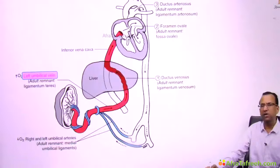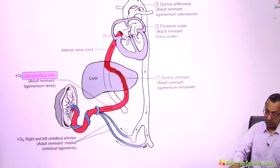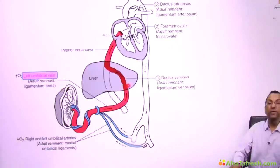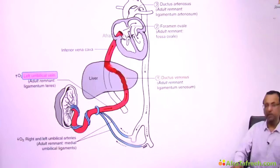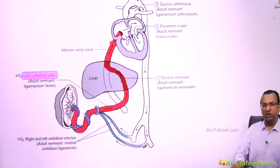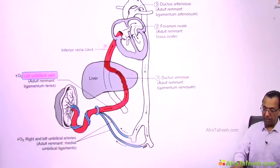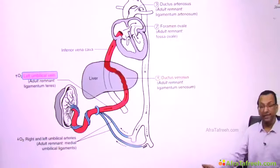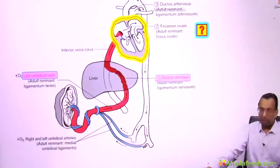The ductus venosus takes the high-concentration oxygenated blood, bypassing the liver, and pushes it directly into the inferior vena cava and the heart.